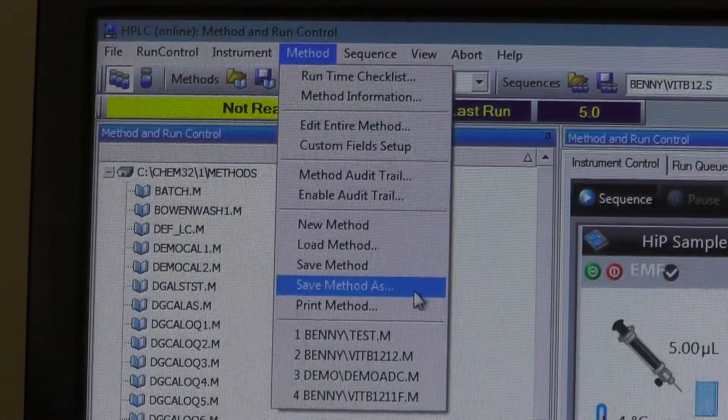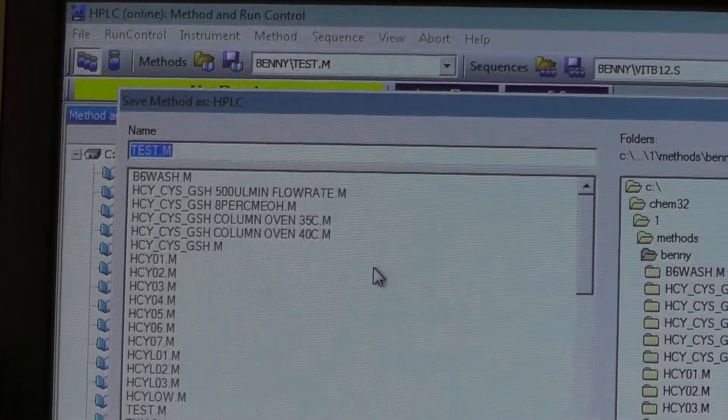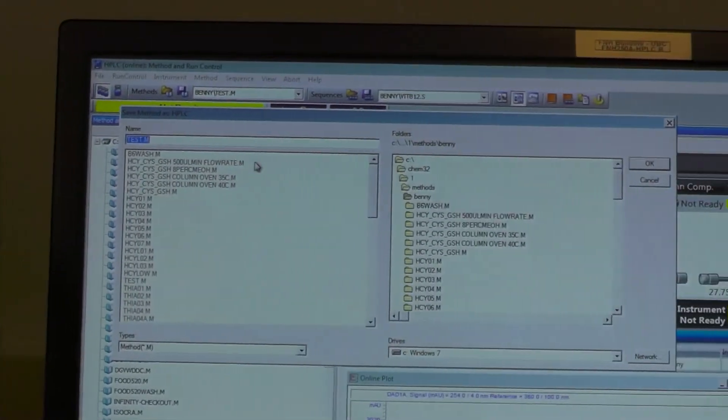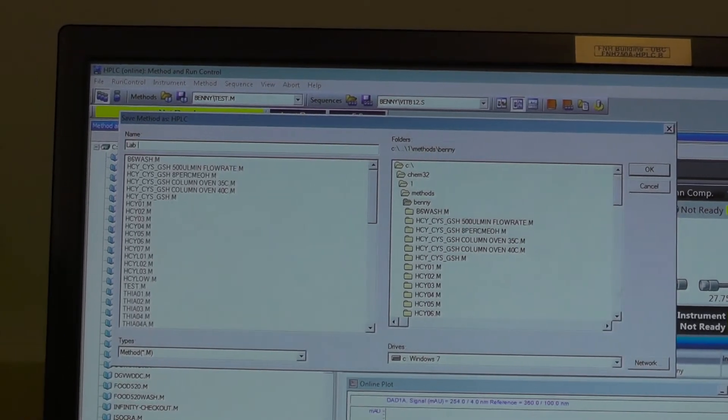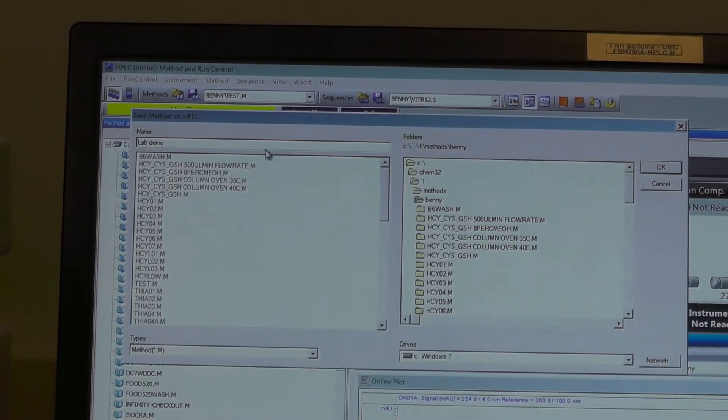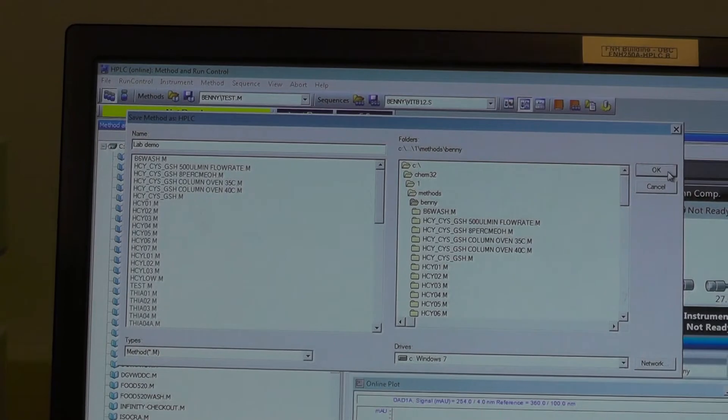After adjusting the method, select Save Method As and save your method in the Method folder. Please note, always select Save Method As instead of Save Method so that you do not override the original method.